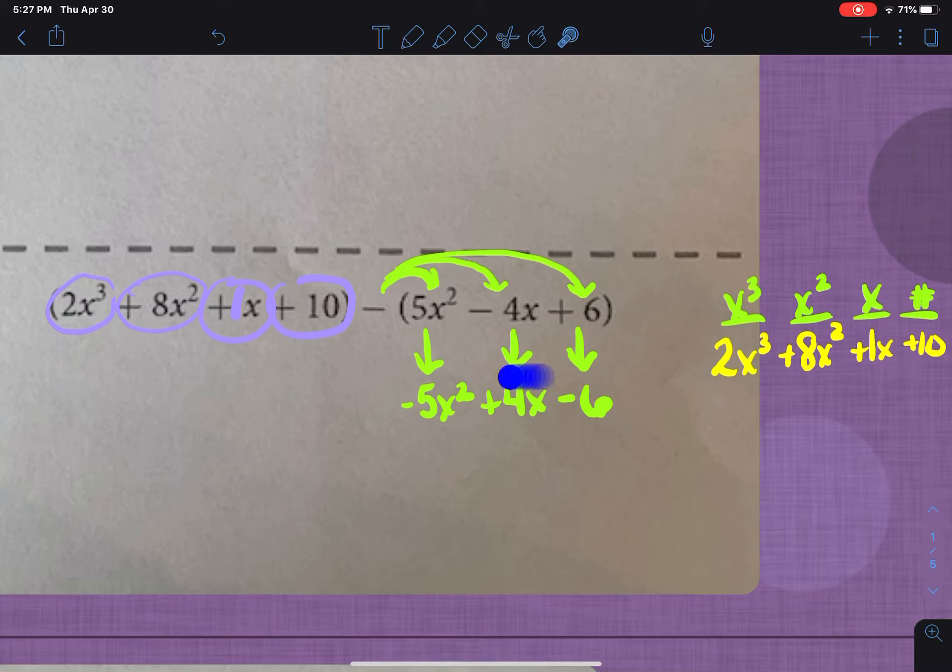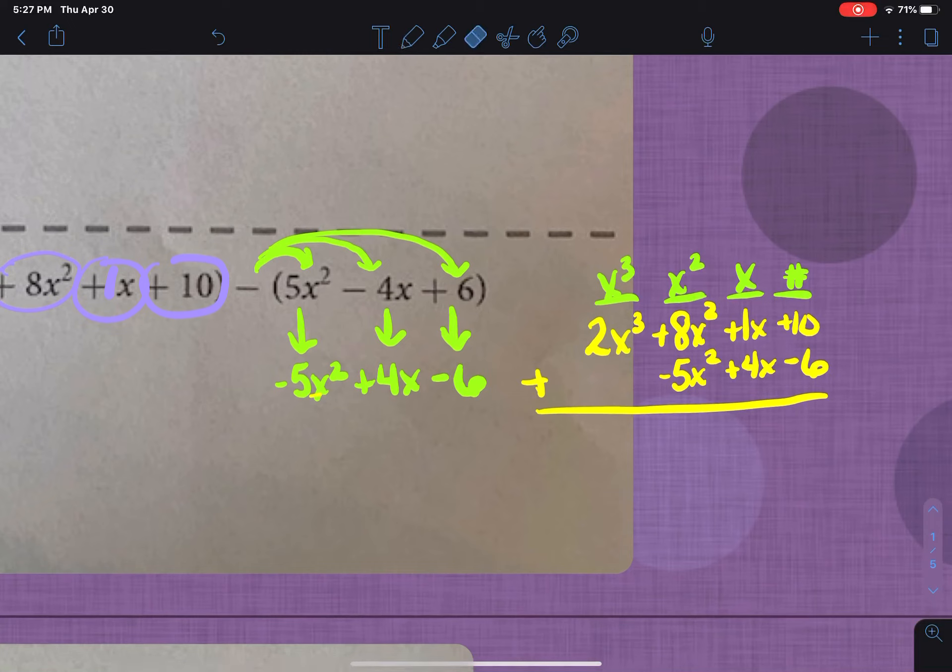And then we're going to go down to this part right here. So negative 5x squared plus 4x and then your negative 6. Then I can make my plus sign and draw my line. So now I'm just going through and starting to total each of my columns. So this one's kind of easy because it only has that 2x to the third that's there. If I go here, positive 8 and negative 5